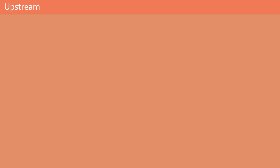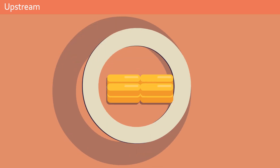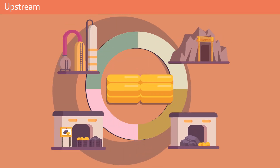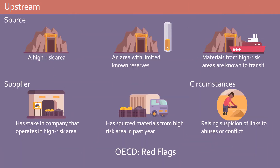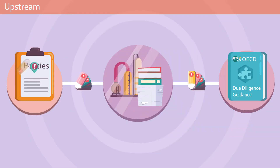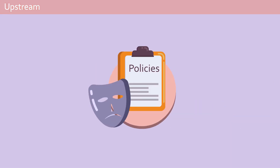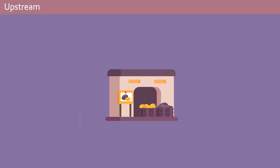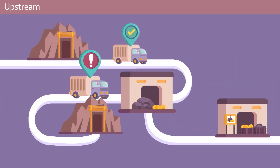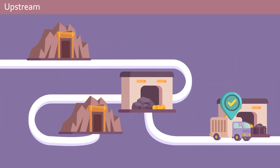The OECD Guidance also identifies red flag circumstances in the gold supply chain — when you find unusual circumstances raising suspicion that an actor was linked to abuses or conflict. You should also define your own red flag criteria for other possibilities, like supplier deception or uncertainty. For example, if a supplier layers a material through complex supply chains to mask its true origin.